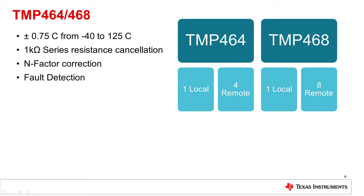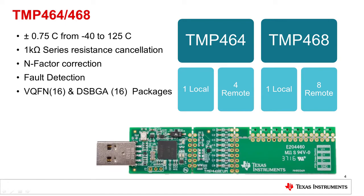The TMP464 and 468 are both available in a VQFN package. The TMP468 is also available in a DSBGA package. These are very small and can be difficult to solder by hand. But for the purposes of this video, we'll be using the breakaway portion of the TMP468 evaluation module pictured at the bottom of this page.